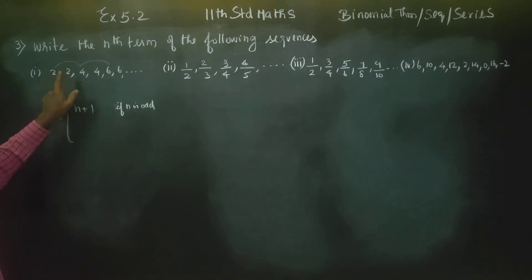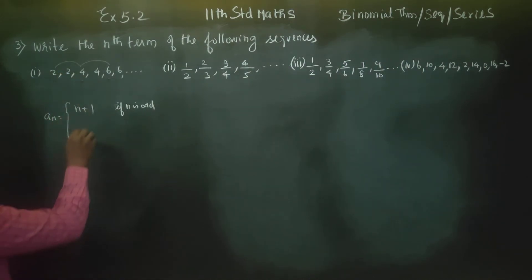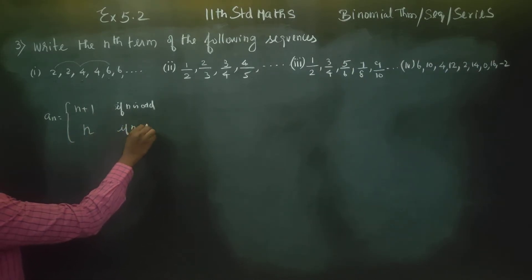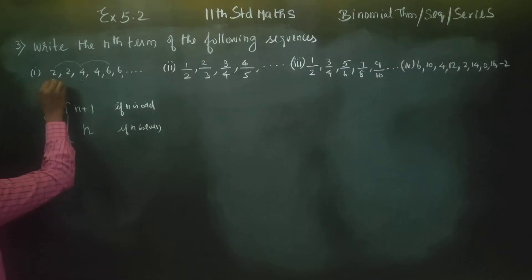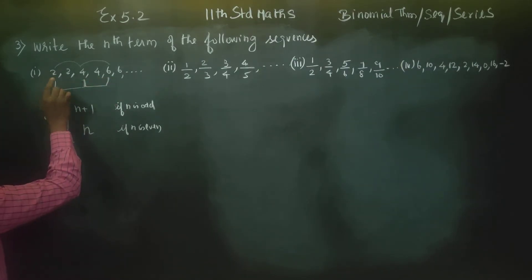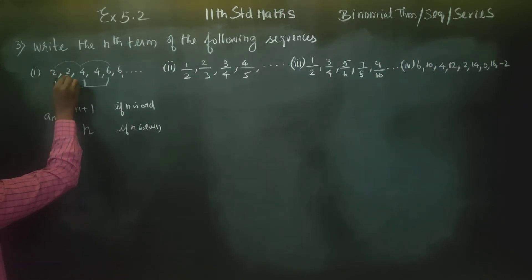Even numbers are the same. The second term, fourth term, and sixth term are the same. If n is even, it will represent the same number.